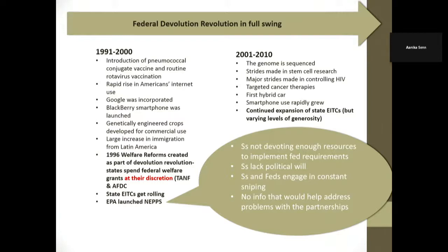EPA actually started thinking about the relationship between EPA and the states — they have this program, NEAPS. Some of you may know NEAPS. States weren't devoting enough resources to implement federal requirements. People realized states lacked political wealth. States and feds engaged in constant sniping — not a surprise. And there was really not much information to help address problems with partnerships. Who talked about trust yesterday? This is a real area for trust that I think is going to be really important, because ultimately you're going to have an institutional conduit through which a lot of this stuff is going to flow.